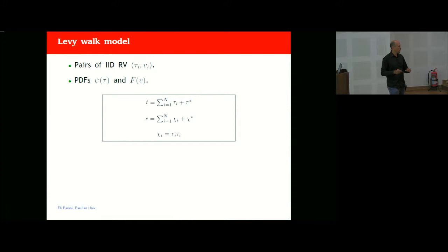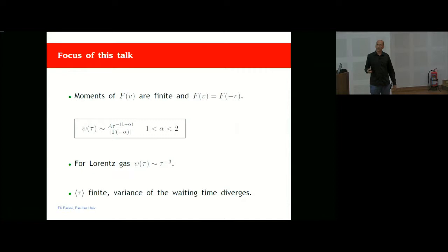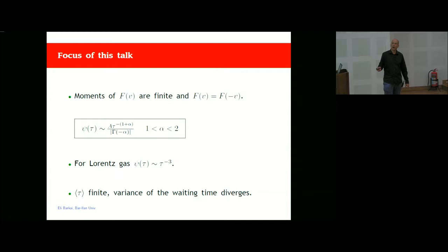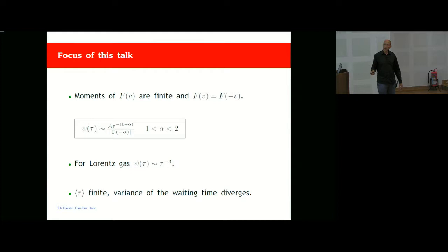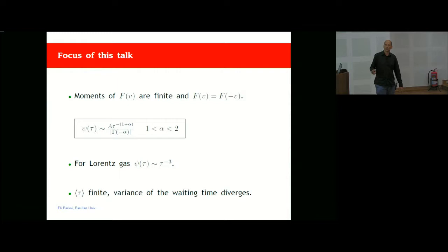In usual processes, these last events are not important, but here they will be very important for describing rare events. The velocity distribution has zero mean, is symmetric, and has finite variance, as in the Lorentz gas. The waiting time pdf is fat-tailed. I focus on alpha between 1 and 2: the mean time between collisions is finite but the variance is infinite. The Lorentz gas corresponds to alpha equal to 2, with logarithmic corrections, but there are many examples of this behavior.